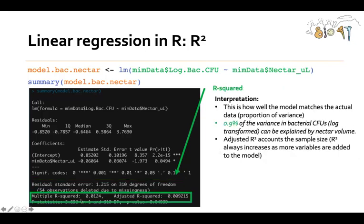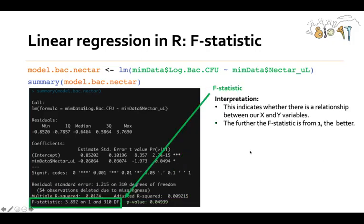Oh, and the final thing is R-squared. So we talked about R-squared in lecture, but essentially it's how well the model matches the actual data or the proportion of variance. And so here we're going to use the adjusted R-squared and we can say that 9.9% of the variance, because this is 0.009. So 0.9% of the variance in bacterial CFUs, after being log transformed, again, that's what the Y is, can be explained by the X nectar volume. And we like to use the adjusted R-squared because it accounts for difference in sample size, because R-squared is affected by sample size.